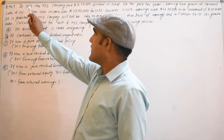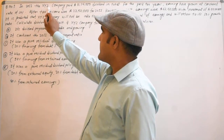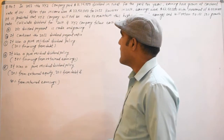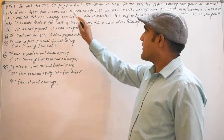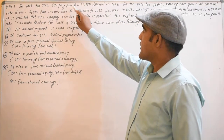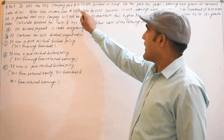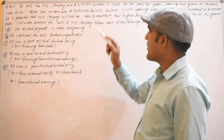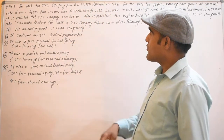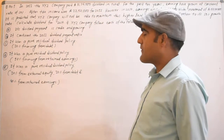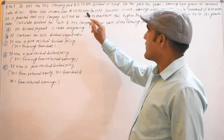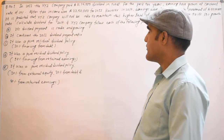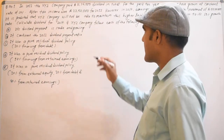In 2013, the XYZ company paid a dividend of Rs. 11,25,000 in total. The dividend payment was made in 2013, and again in 2015.